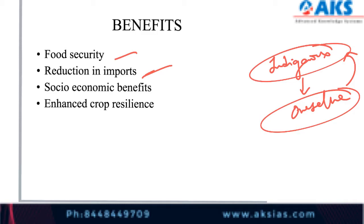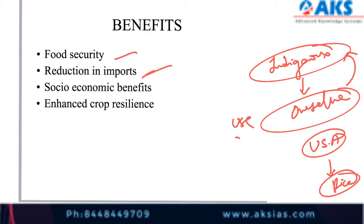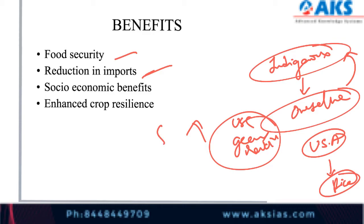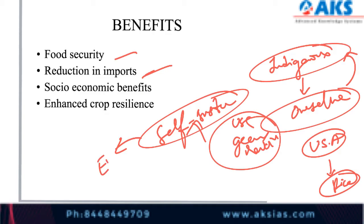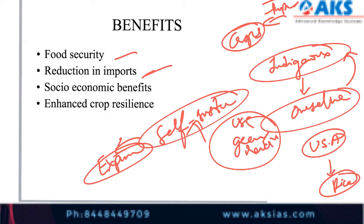Earlier we used to depend on the USA for rice, but later through the green revolution we became self-sustaining and even started exporting. In some crops we are still import-dependent, but if we adopt GM crops, our import dependency will reduce.